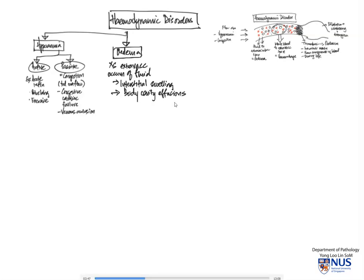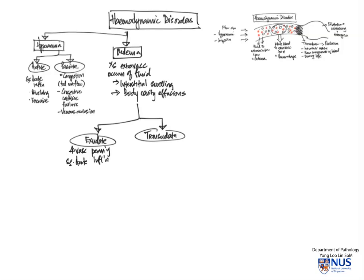So this gives rise to body cavity effusions. And there are two main types of effusions. They can be exudates or they can be transudates. They are due to different causes and also have different protein levels. So exudates are due to increased vascular permeability. And this is an active process often. And we can see this, for example, in acute inflammation.